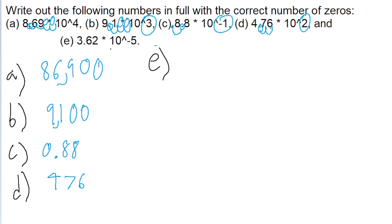Finally, for part E, we have 3.62 raised to the power of negative 5, so we take the decimal point and move it five spaces to the left. So that's 1, 2, 3, 4, 5. So we're going to have a lot of zeros in this one. We put the decimal point right at the beginning, and then that's four zeros. So 0.000362.